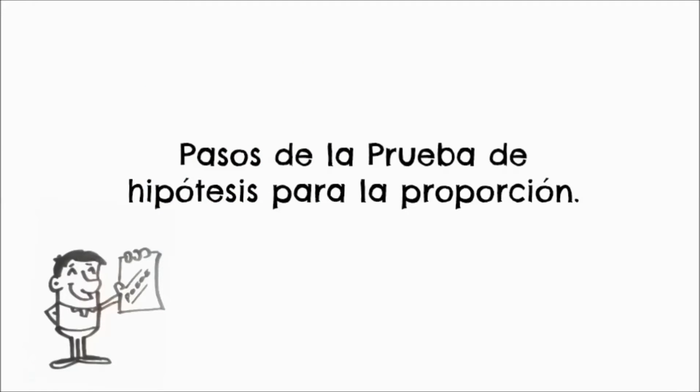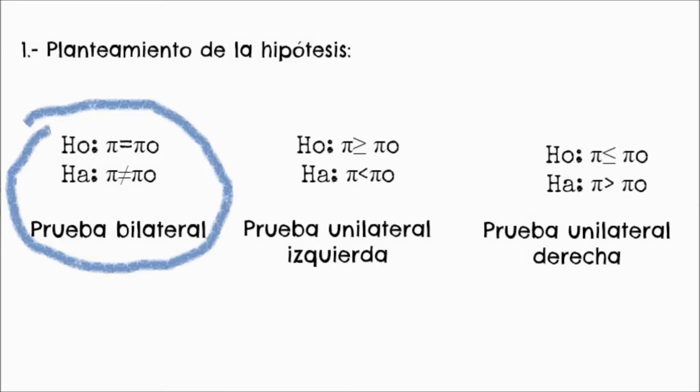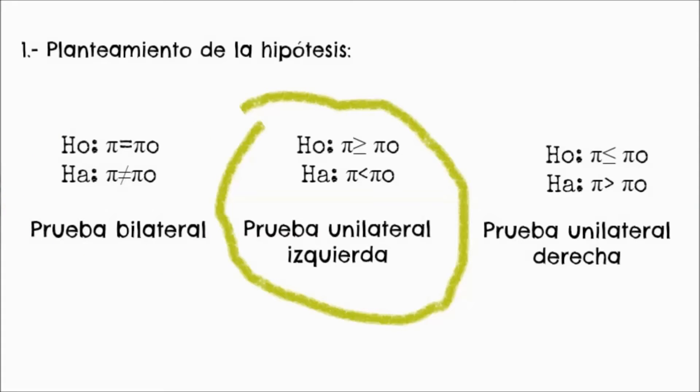Prueba de hipótesis para la proporción. Paso 1, planteamiento de la hipótesis. Esta presenta tres situaciones. Número 1, prueba bilateral: la hipótesis nula se plantea como la proporción de la población es igual a la proporción que se desea probar; la hipótesis alterna se plantea como la proporción de la población es diferente a la proporción que se desea probar. Número 2, prueba unilateral izquierda: la hipótesis nula se plantea como la proporción de la población es mayor o igual a la proporción que se desea probar; la hipótesis alterna se plantea como la proporción de la población es menor a la proporción que se desea probar.